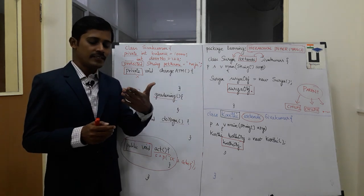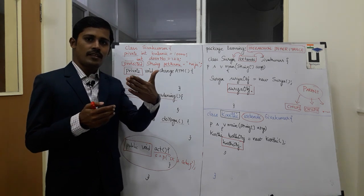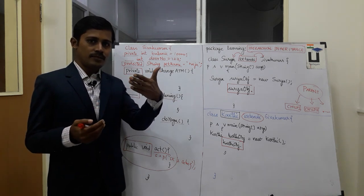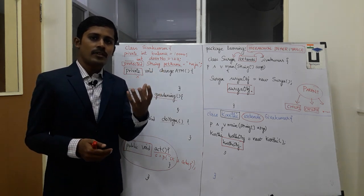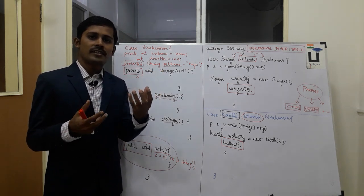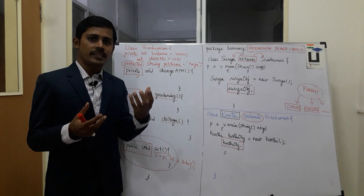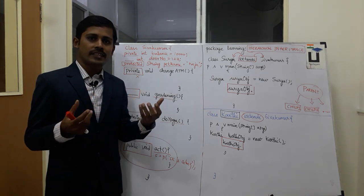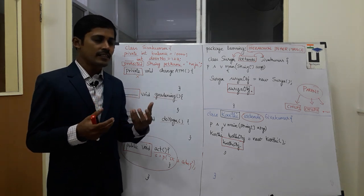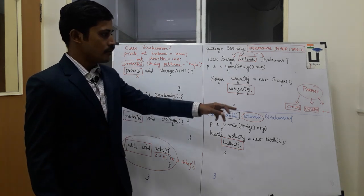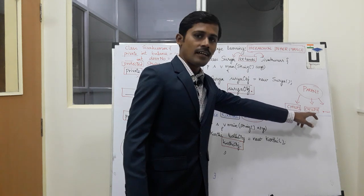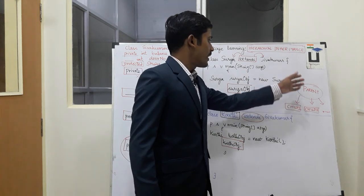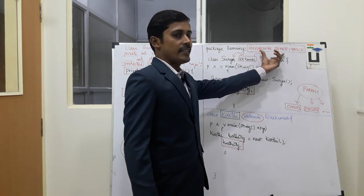Single Inheritance is one parent, one child. If you have one parent, you can have one child. That means Single Inheritance. Hierarchical Inheritance means one parent can have multiple children.